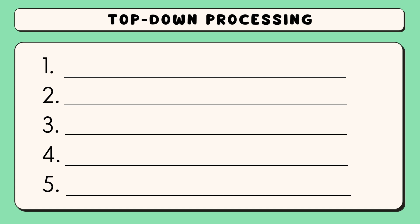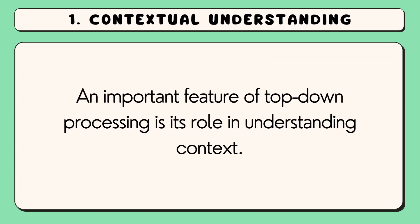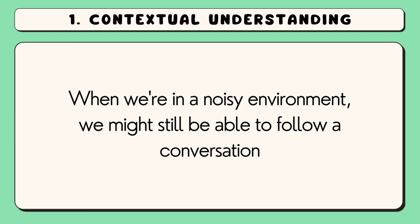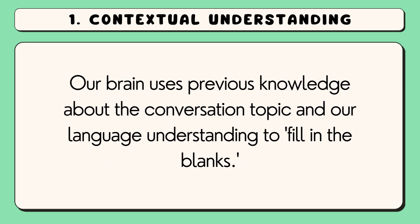Let's start with the first key feature: contextual understanding. An important feature of top-down processing is its role in understanding context. When we're in a noisy environment, we might still be able to follow a conversation because our brain uses top-down processing to anticipate and fill in words that might have been masked by the background noise. Our brain uses previous knowledge about the conversation topic and our language understanding to fill in the blanks.